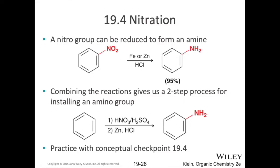The nitro group, from a synthetic standpoint, is pretty useful. One extra synthetic utility is that we can convert a nitro group into an amine. We can do a reduction using either iron or zinc and hydrochloric acid, and our nitro group gets converted into an amino group. So for any synthetic problems that require you to add an amine to your benzene ring, realize that you can do so in two steps: first, make your nitrobenzene using concentrated nitric and sulfuric acid, and in the next step use either zinc or iron and HCl to reduce that to the corresponding amine.